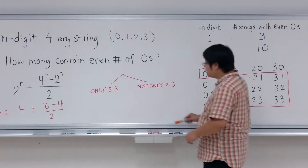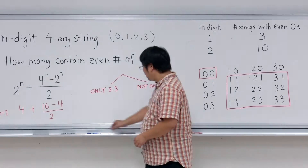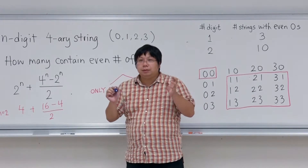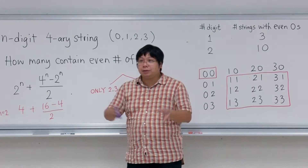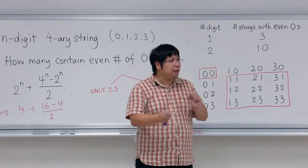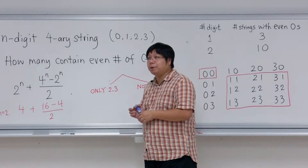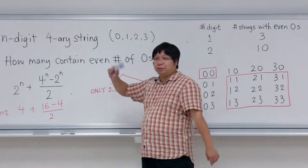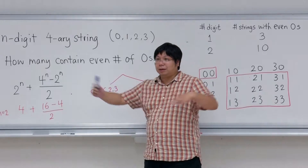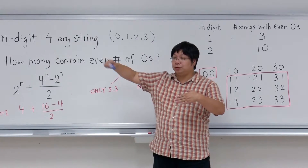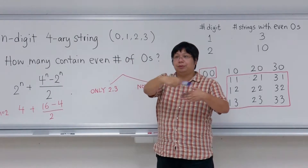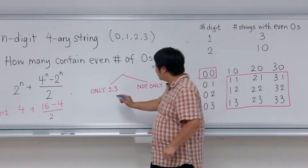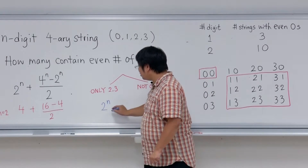For each case, let's count the strings with even number of zeros. For the first group — only twos and threes — you don't have any zeros, so any string of just twos and threes automatically has even number of zeros. There are n positions, each choosing two or three, so there are 2^n such strings.